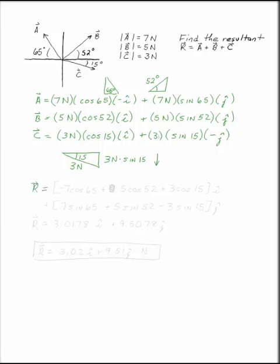Once you have these three vectors, you can literally add them up to find the resultant. This is going to be minus 7 cosine 65 plus 5 cosine 52 plus 3 cosine 15. We're adding up the i's, and then we're going to add the j's.